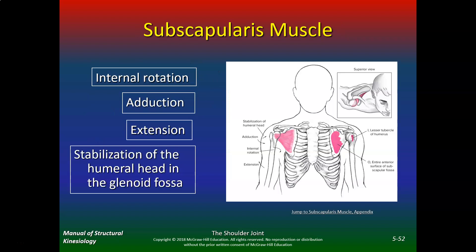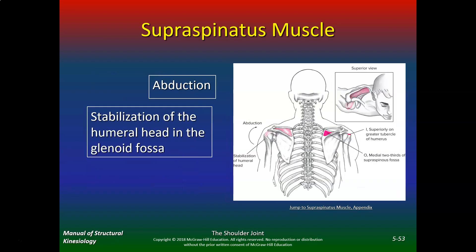The subscapularis does internal rotation, adduction, extension, and stabilization of the humeral head in the glenoid fossa. Make sure you know what these muscles do, where they're located, and their true function. The supraspinatus is the most commonly injured — it does abduction and stabilization of the humeral head. Sometimes the deltoid is so powerful that it jams the glenohumeral joint upward and pinches the supraspinatus within that AC joint, called subacromial impingement.